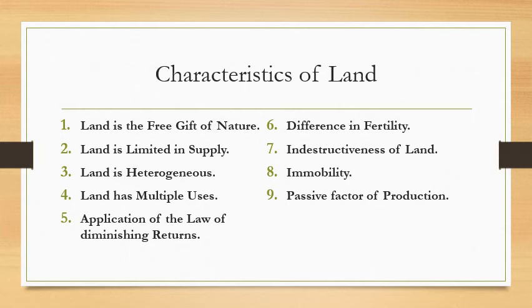Number seven: indestructiveness of land. Land is an indestructible factor of production. Man can change only the shape of a particular location, but as such land cannot be destroyed.